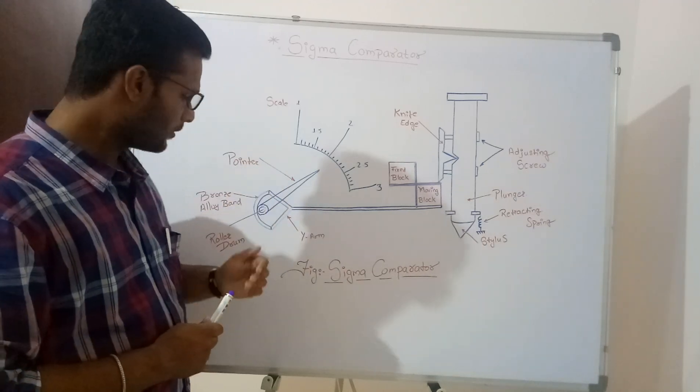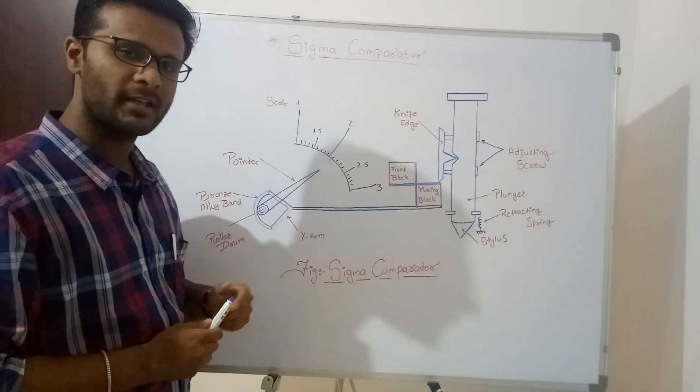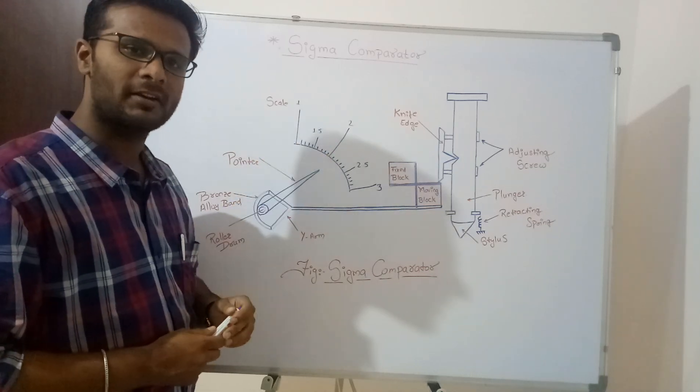To the roller rotating drum we are having pointer attached to it and after pointer we are having calibrated scale.